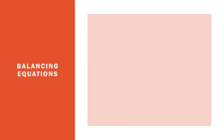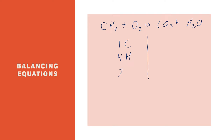Let's start with an equation like CH4 plus O2 yields CO2 plus H2O. This is a combustion reaction because you're reacting a compound with O2 gas. If you look at it right now, we've got one carbon atom, four hydrogen atoms, and two oxygen atoms on the reactant side on the left, and we have one carbon atom, two hydrogen atoms, and three oxygen atoms on the product side on the right.